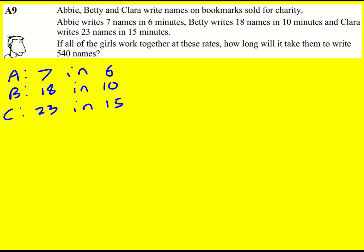Now these are all different times, but could we make it so it's the same time period? If we make it the same time period then we can know how many they did in total in that time period. So what we actually want to find is the lowest common multiple of 6, 10, and 15. The easiest approach here is to write down your 15 times table until you get to 30. And actually 10 goes into 30 and 6 does, but they don't go into 15, so 30 must be the lowest common multiple.